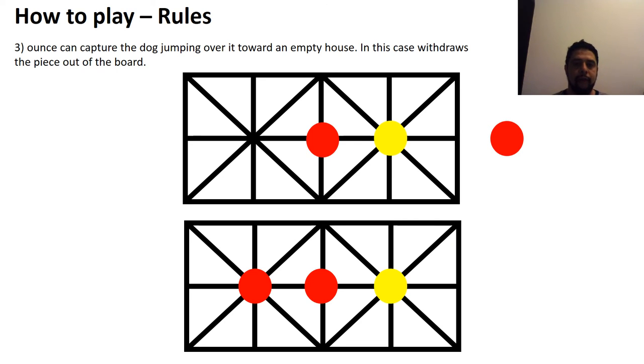The rule of capture the piece. For the ounce, ounce is allowed to jump over the dog and capture the dog. Here is the ounce. The ounce will jump over the dog. When the ounce is jumping over the dog, the piece will stay here. And this dog jumped over, will be dragged dropped for over the board.